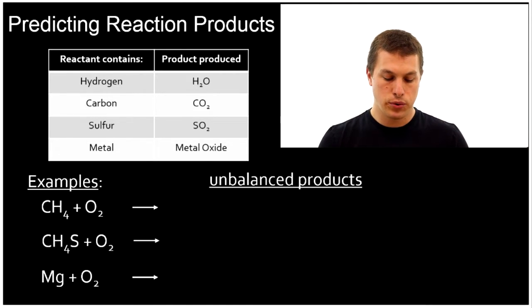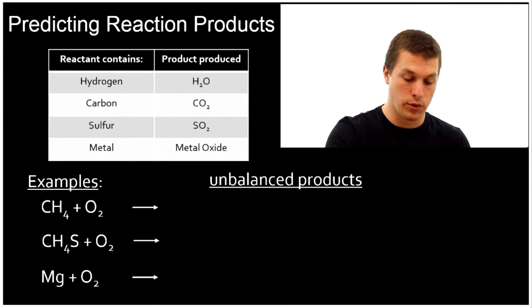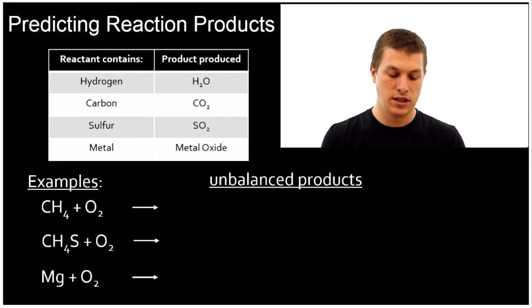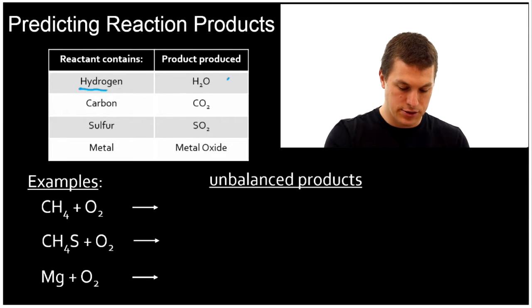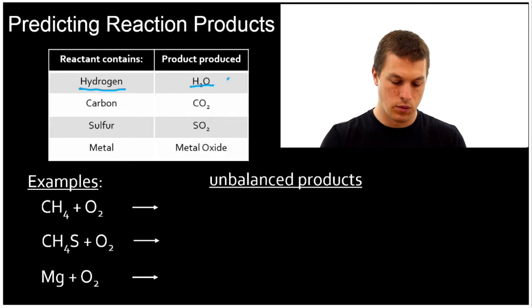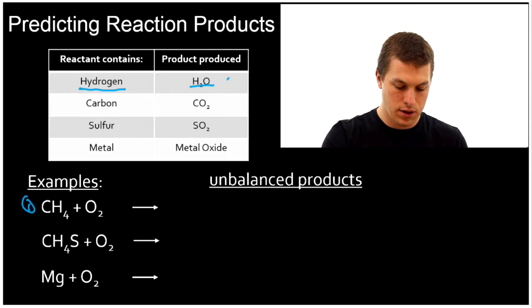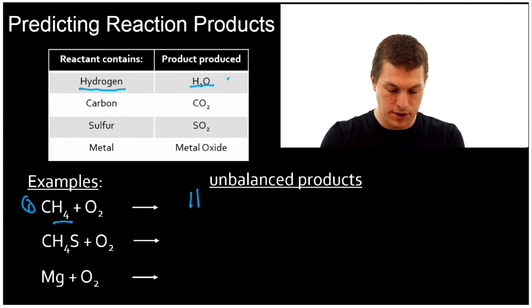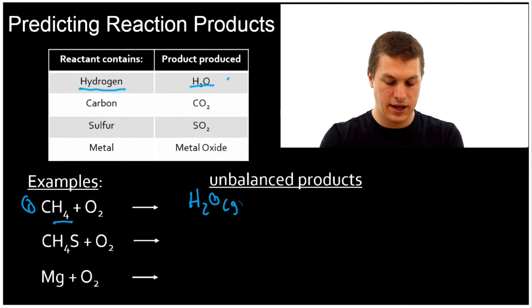So let's go through predicting the products then of these few reactions I have written down below really quickly. And they're just going to be the unbalanced products. The final step when you want to predict the products of a combustion reaction is to balance the reaction. We're just going to give you an idea of how to use this chart. So if my reactant contains hydrogen, I know I get H2O. Well, down here in my first example, I have methane, CH4, and it contains hydrogen. So that tells me one of my products is going to be H2O and it's going to be a gas.